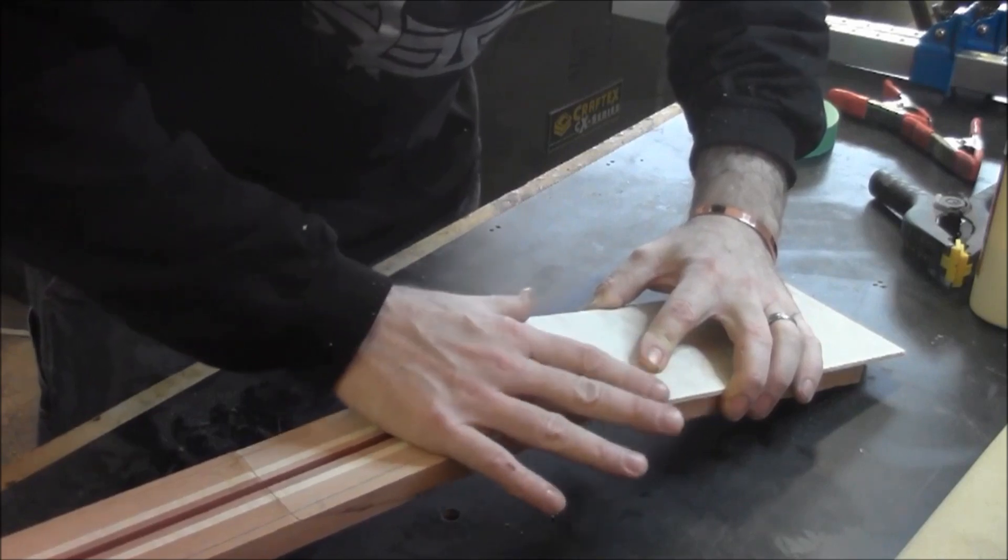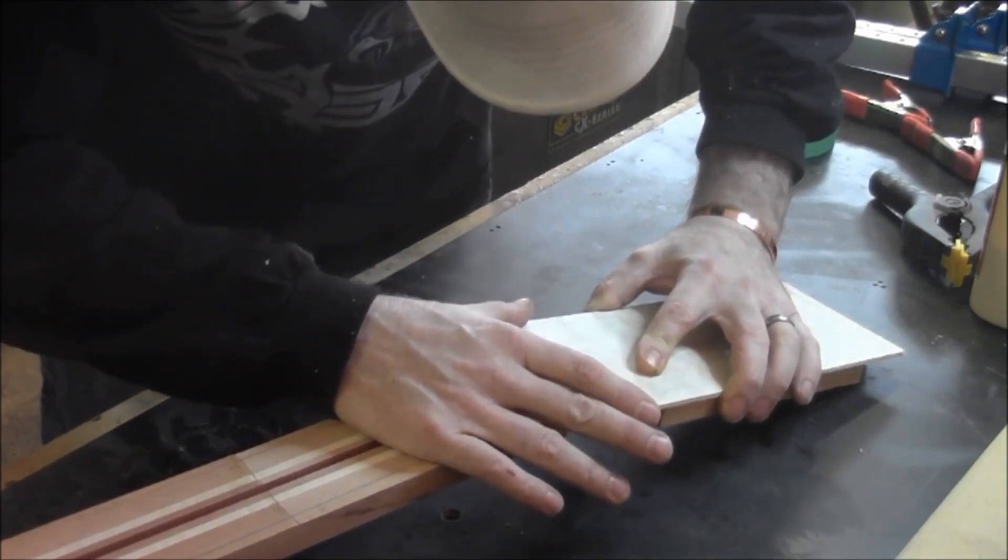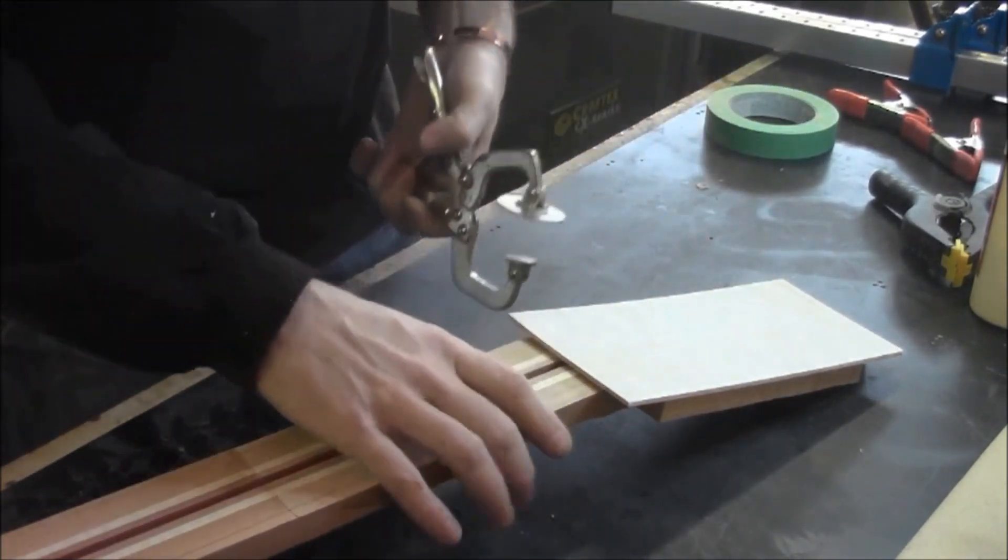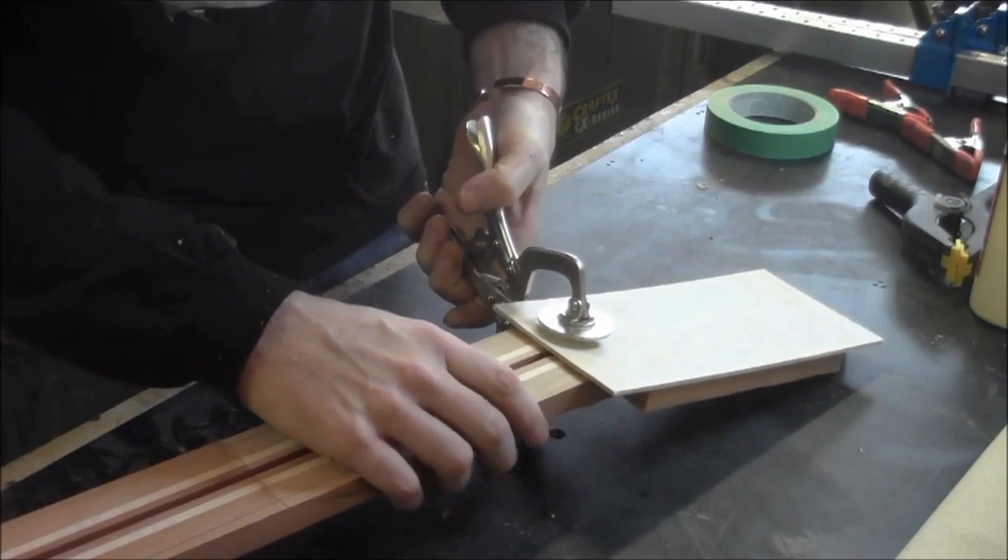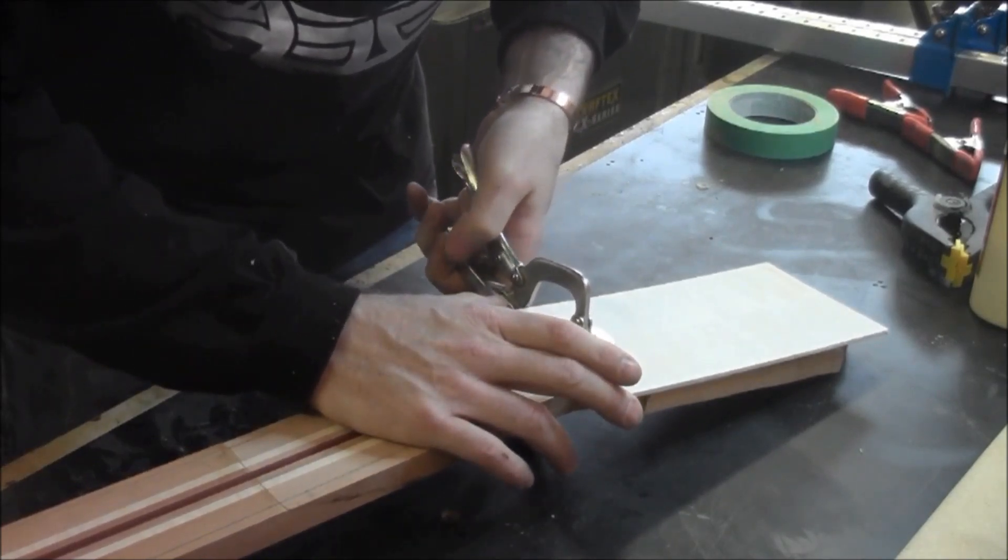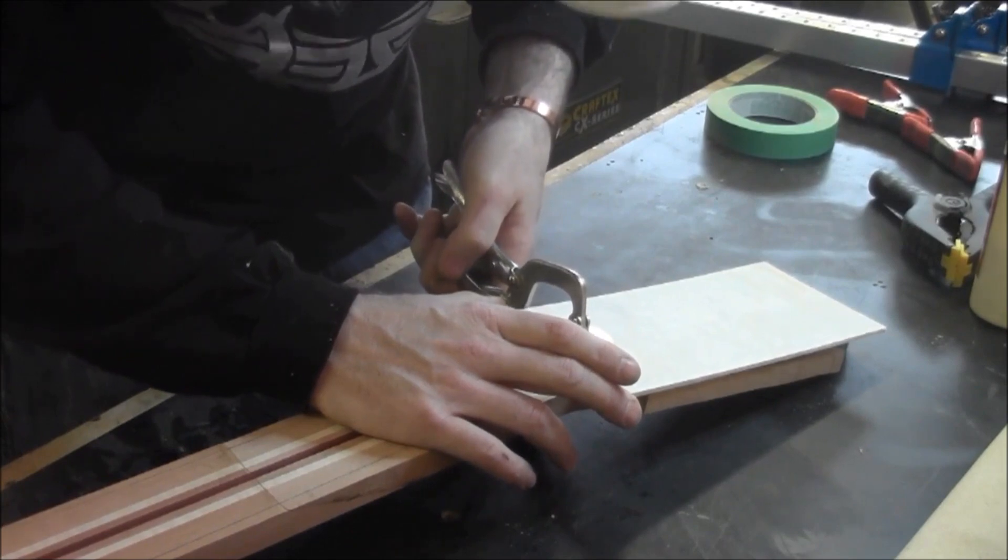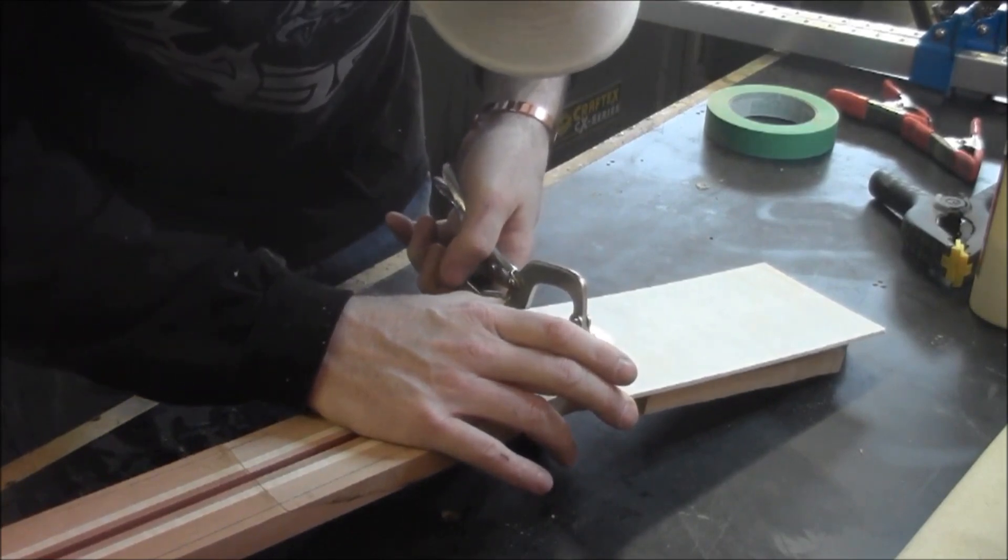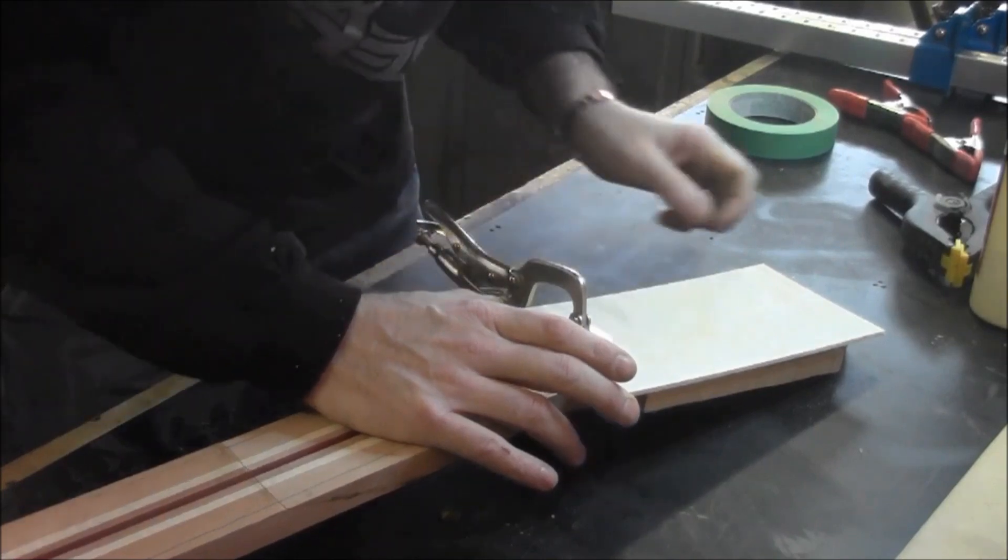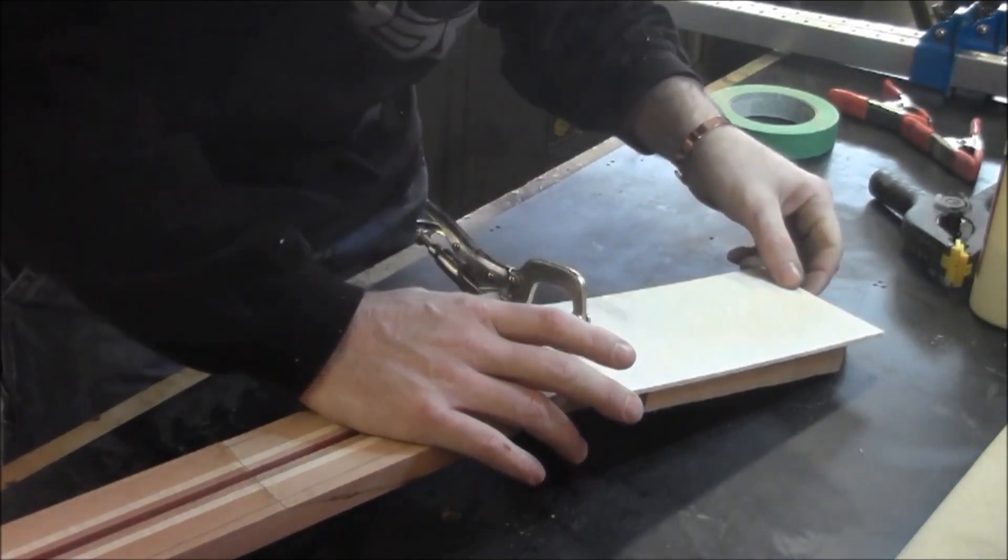The book match doesn't seem to be matching up—there we go, this is the side we want to use. Let me get that into position. I'll put a little bit of clamping pressure on to hold it in place. We're looking to get that seam right in the center of where the truss rod slot is. Rise it up a bit, and it's going to be perfect right there.